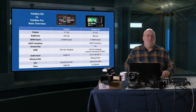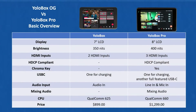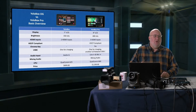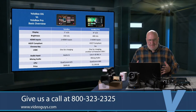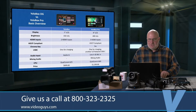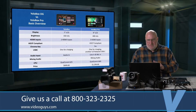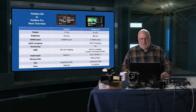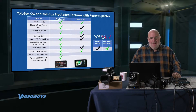Let's go into the overview of these two products. The most important differences: eight inches versus seven inches display; the YoloBox Pro is a bit brighter; three HDMI inputs versus two; chroma key is a great feature in the Pro — I don't think you'll get chroma key in the standard YoloBox as it's processor-dependent. USB-C: two ports on the Pro — one for charging, one full USB-C for storage, line-in, and mic-in. The Pro also has rudimentary audio mixing and the bigger Qualcomm 660 processor.